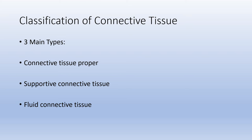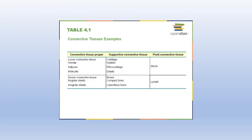There are three main broad categories of connective tissue: connective tissue proper, supportive connective tissue, and fluid connective tissue. Connective tissue proper includes loose and dense connective tissue, each further subdivided. Supportive connective tissue includes cartilage — with three types — and bone, with two types. Fluid connective tissue includes blood and lymph.